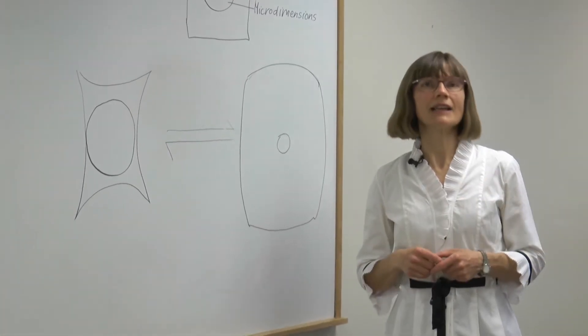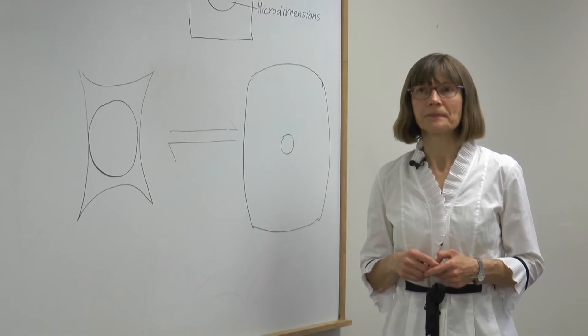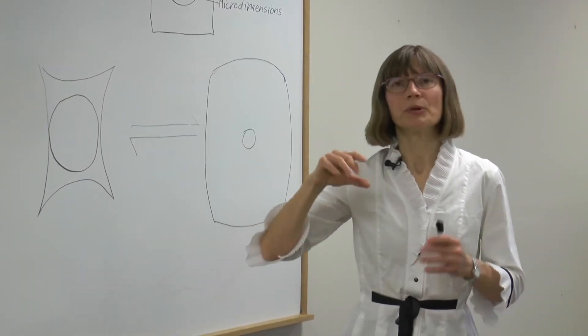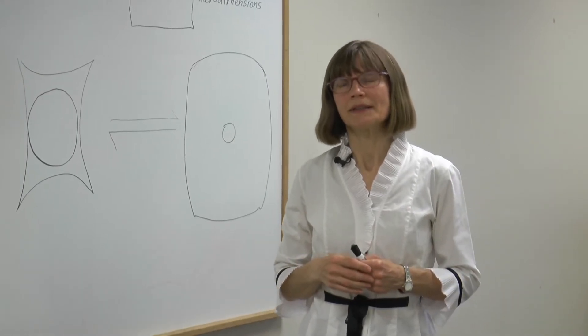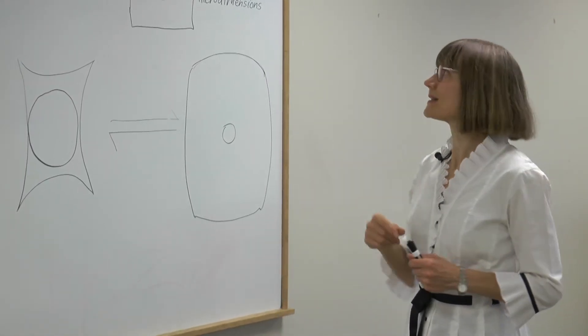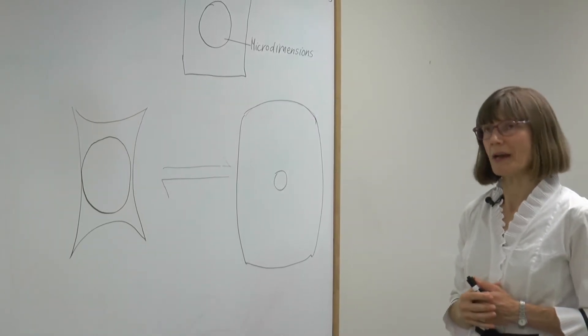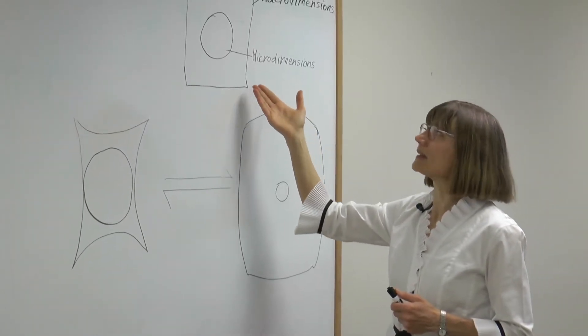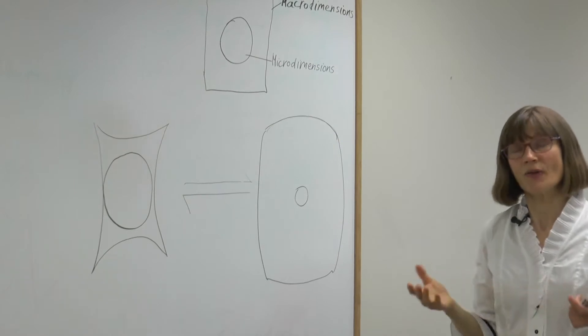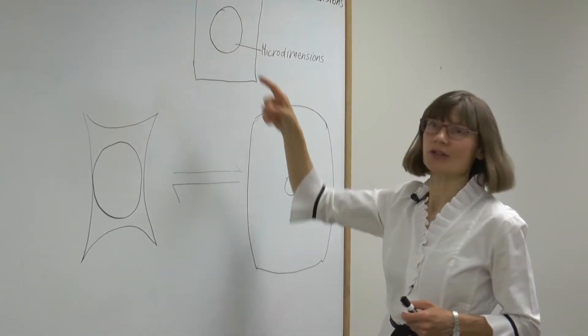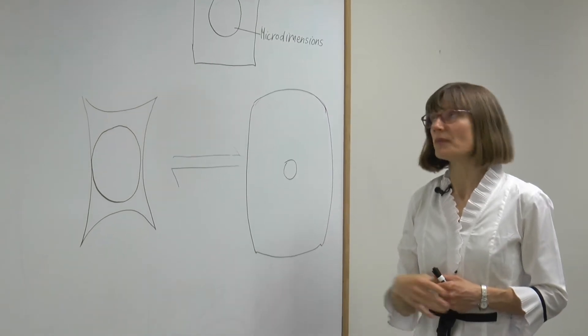Let's investigate interaction. Imagine taking a sample from our environment, just a tiny sample. It would be a cube, perhaps, which we can represent in two dimensions as a square. In it, the micro dimensions we can model with a circle.